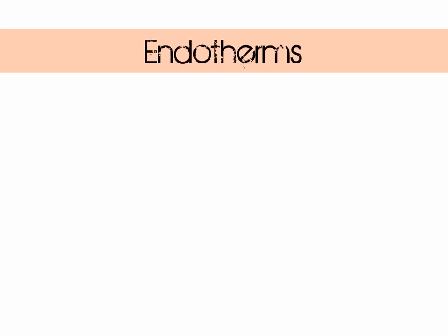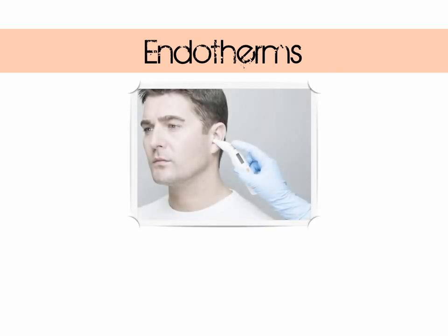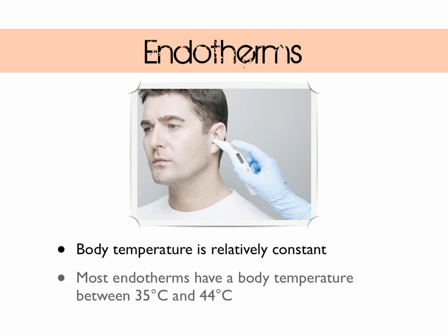Let's move on to endotherms. These have a relatively constant body temperature that in most cases ranges from 35 to 44°C. That's a compromise between having a higher temperature that would allow enzymes to function at a faster rate and the amount of food that would have to be consumed in order to maintain that higher temperature.